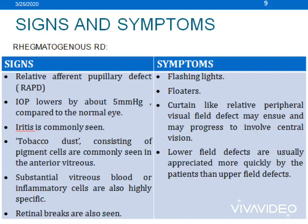Rhegmatogenous RD usually shows signs of RAPD, low IOP, tobacco dust, presence of vitreous blood, and retinal breaks. The associated symptoms are as follows.